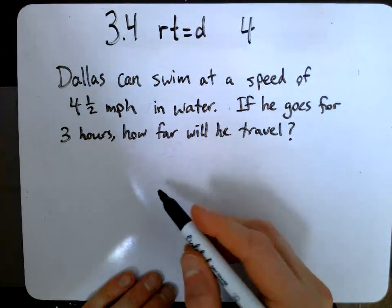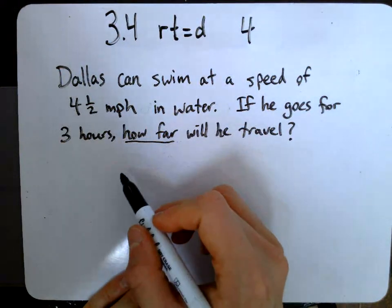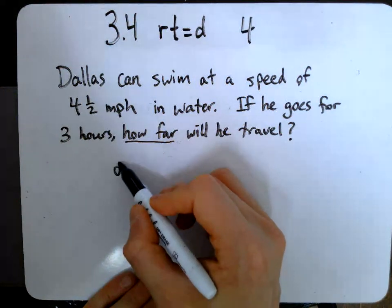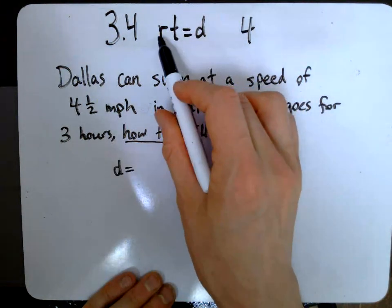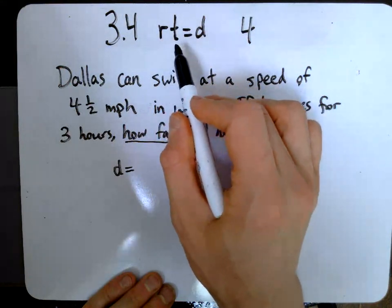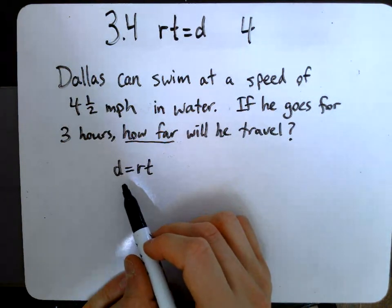Okay, hopefully you've recognized that what we're looking for, what we don't have, is distance. How far? So we're looking for an equation that has D equals something. And actually, look at that, we already have it: D equals R times T. So that's handy.